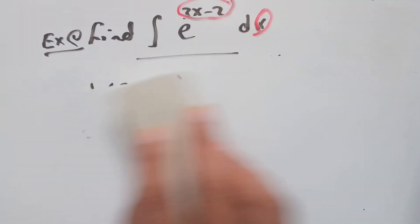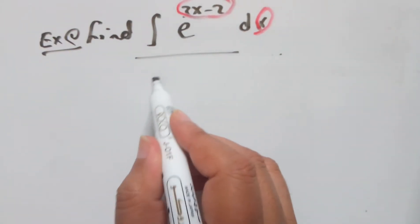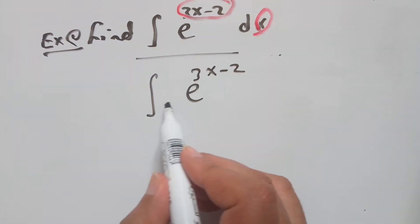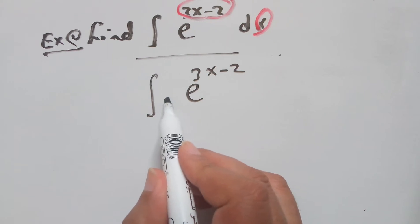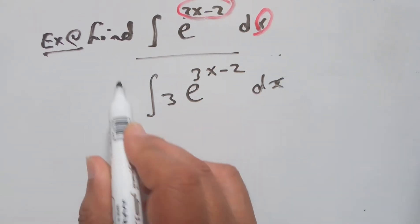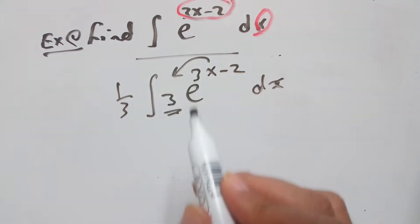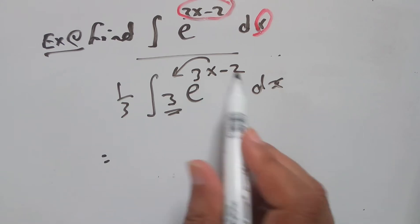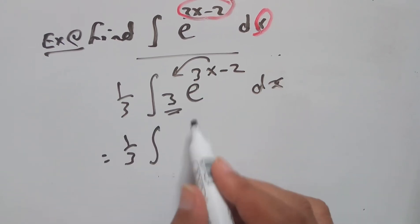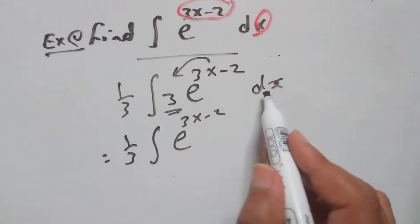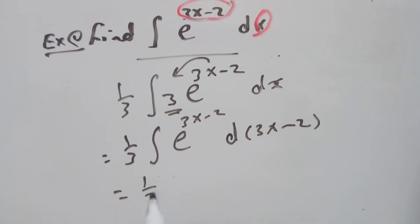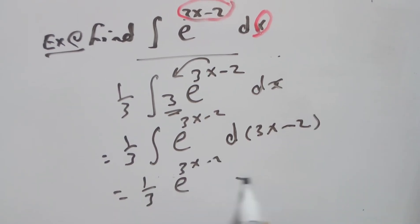As a shortcut: look for the derivative of 3x, which is 3, then divide by 3. You have 3 dx here, divide by 3 outside, and the value inside becomes the derivative of the exponent. So the integral of e to the power 3x minus 2, with 3 dx meaning d(3x minus 2), gives e to the power 3x minus 2 plus c.